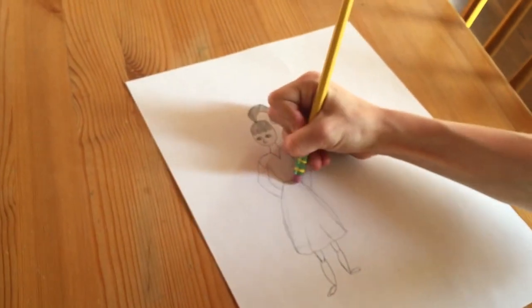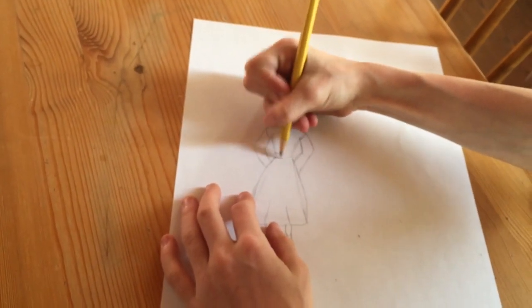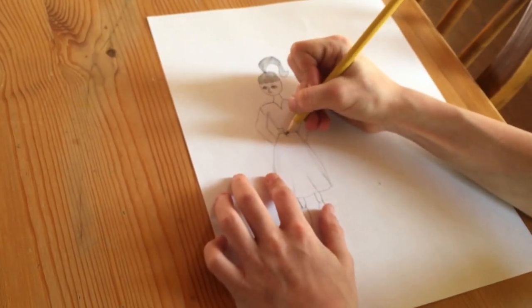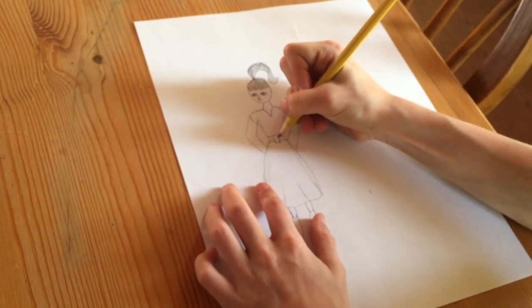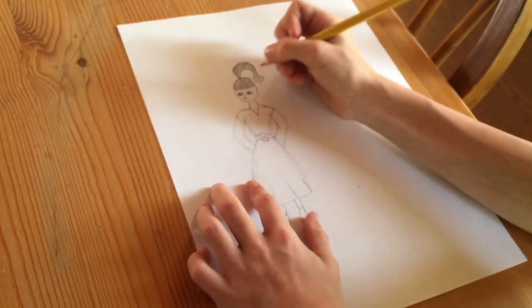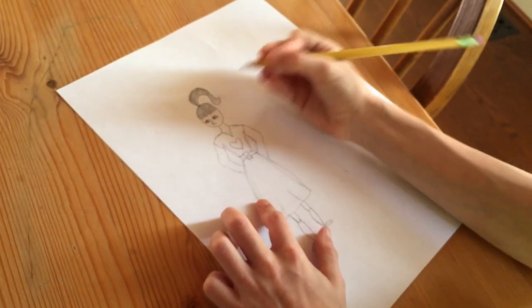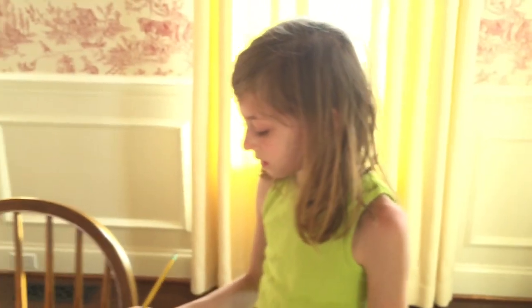So now you can just decorate the dress or anything however you want. I'm going to make a little belt here on her waist. Like that. And then you can just decorate it however you want. And then you're pretty much done.